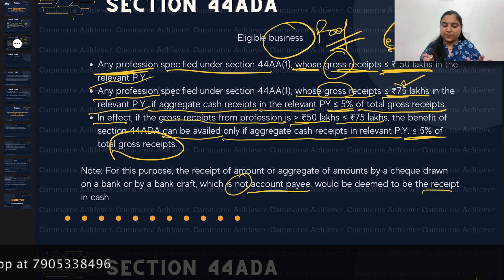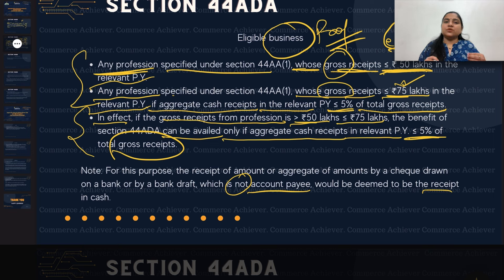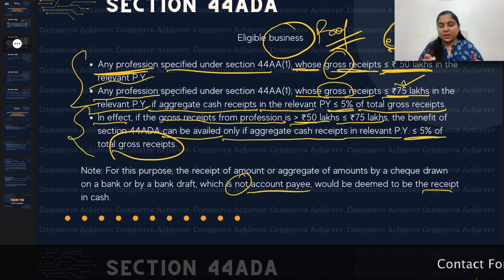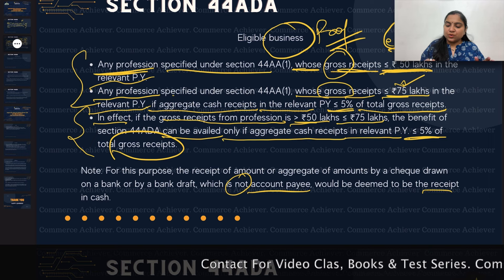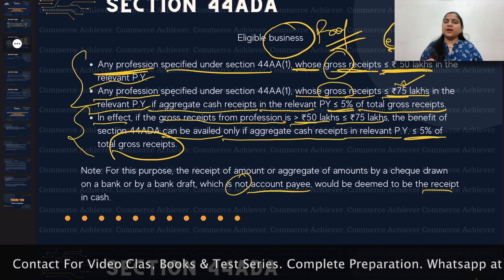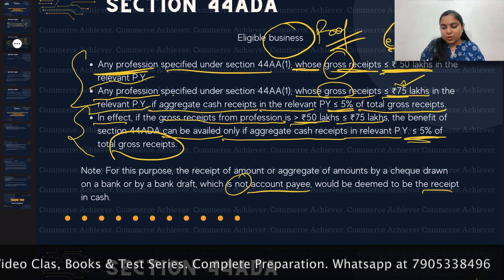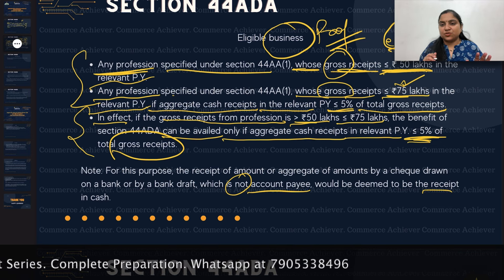To be clear: if you are in the profession and your cash receipt is more than 5%, check the 50 lakh limit. If cash receipt is equal to or less than 5%, you will get the 75 lakh limit. For example, if gross receipt is 60 lakhs, then cash receipts must be 5% or less for the higher limit to apply.